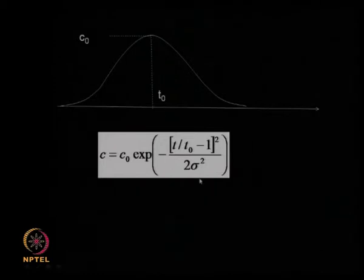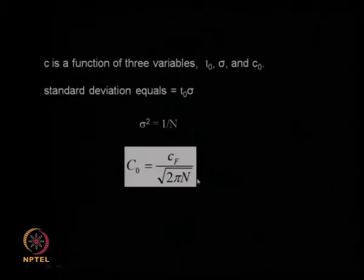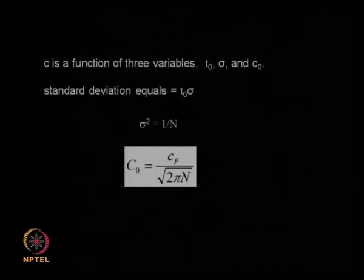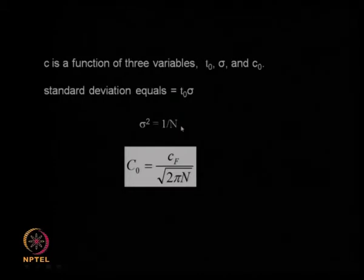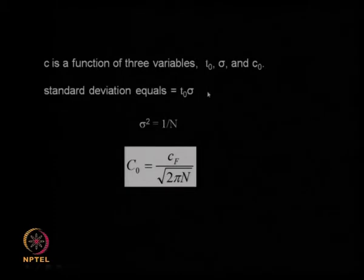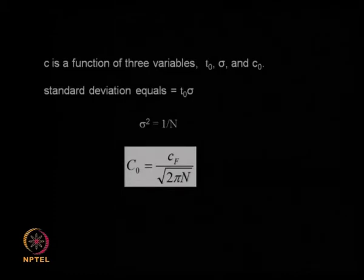t-naught is your retention time and the standard deviation for this Gaussian distribution will be t-naught times sigma. Making use of that, we brought in the concept of number of theoretical stages or theoretical plates. The theoretical plates are connected to sigma in this fashion: sigma squared is equal to 1 by n. So if sigma becomes smaller and smaller, n becomes larger and larger. If the Gaussian curve is very sharp, the number of theoretical plates is going to be very large, and if the Gaussian distribution is very broad, the number of theoretical plates is less.